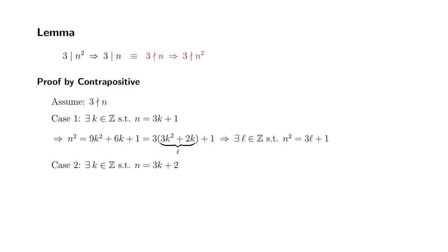Now about case 2. Case 2, we do basically the same thing. I'm going to square both sides of the equation. You get n squared equals 9k squared plus 12k plus 4.